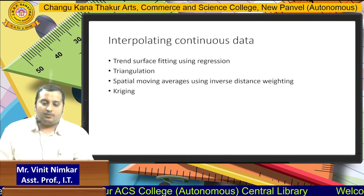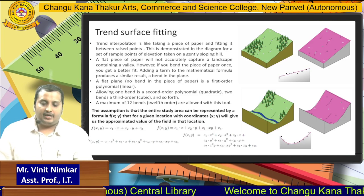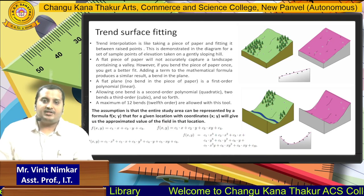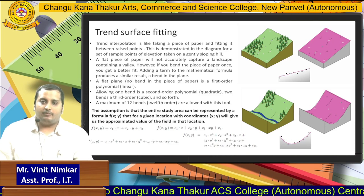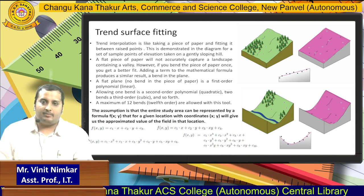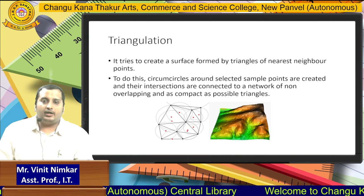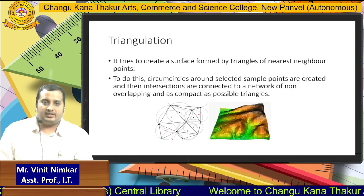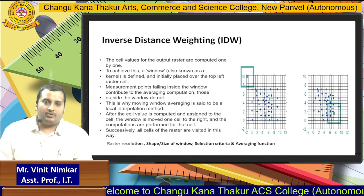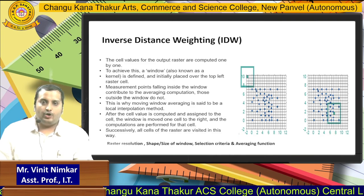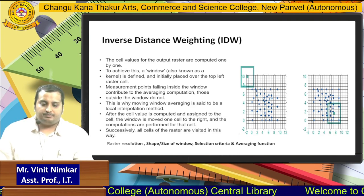For interpolation of continuous data, the trend surface fitting method is available. In the trend surface fitting method, a flat surface area of data can be perfectly fit, and the slope and elevation can be mentioned in our map as shown in the diagram. The triangulation method involves drawing circumcircles around any three known points in the region to build a proper triangle. There is also the inverse distance weighting method, in which a particular window is taken and all points and values appearing inside that window will have the same values.